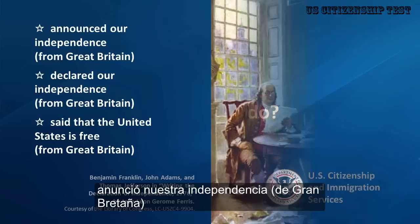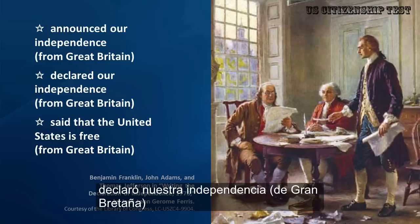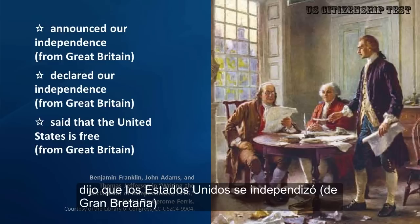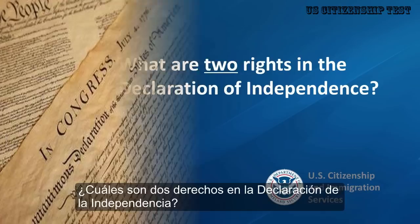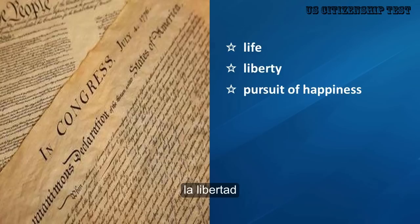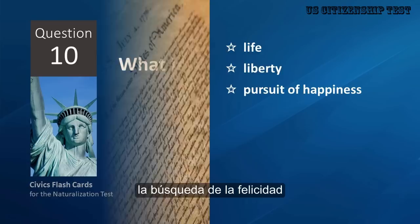What did the Declaration of Independence do? Announced our independence from Great Britain, declared our independence from Great Britain, said that the United States is free from Great Britain. What are two rights in the Declaration of Independence? Life, liberty, pursuit of happiness.